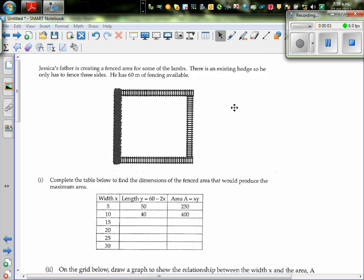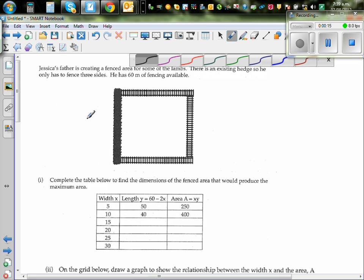Jessica's father is creating a fenced area for some of the lambs. There is an existing hedge, so he only has to fence three sides. He has 60 meters of fencing available. So this is the hedge, and this is where the fencing happens.